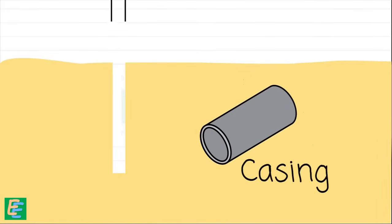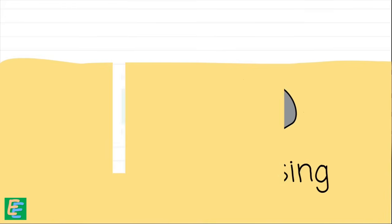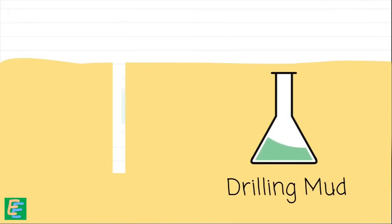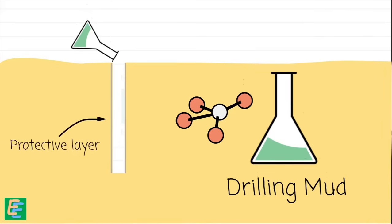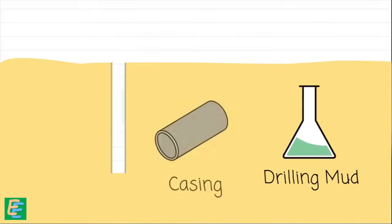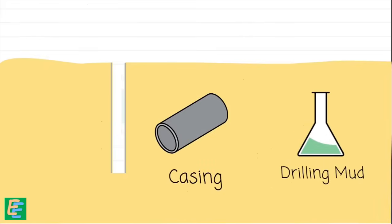To prevent this, engineers use a hollow pipe called a casing and insert it into the borehole as they drill. Sometimes instead of a casing, engineers use a fluid called drilling mud. This is a special chemical mixture that, when poured into the hole, forms a thin protective layer on the borehole walls. Both methods support the sides of the borehole and keep the soil from falling in, allowing us to carry out the test smoothly.